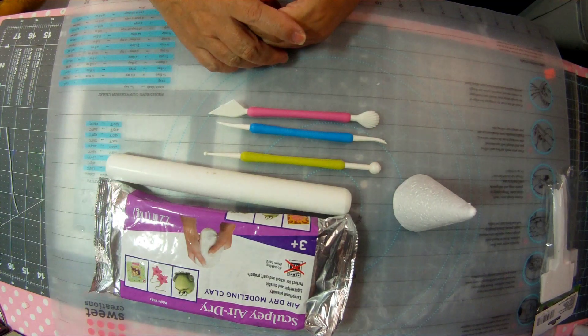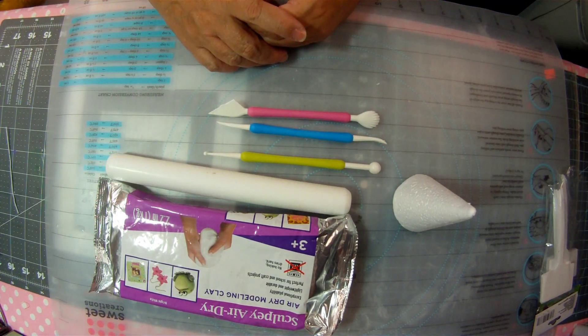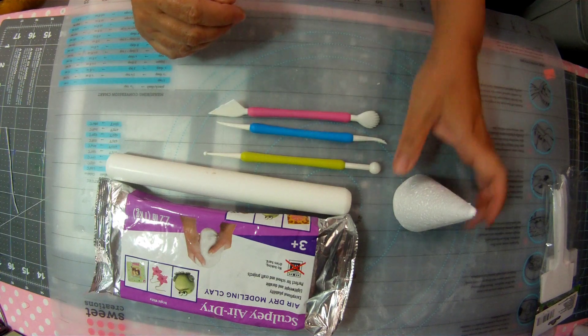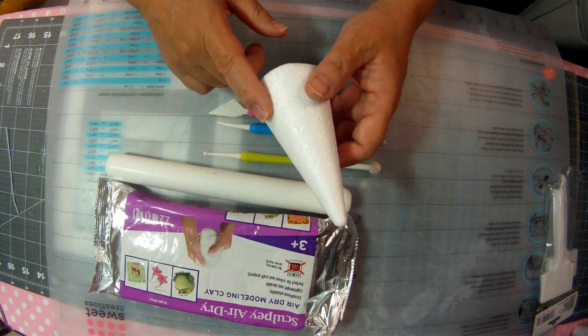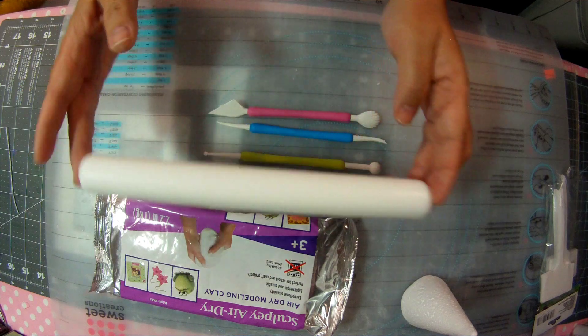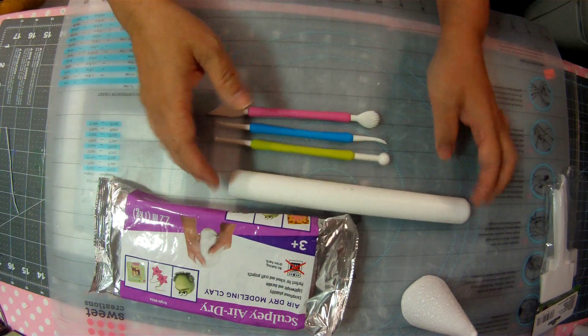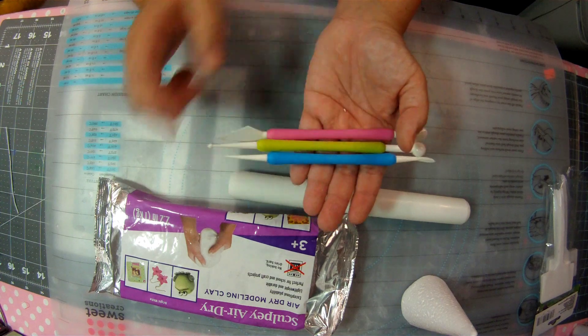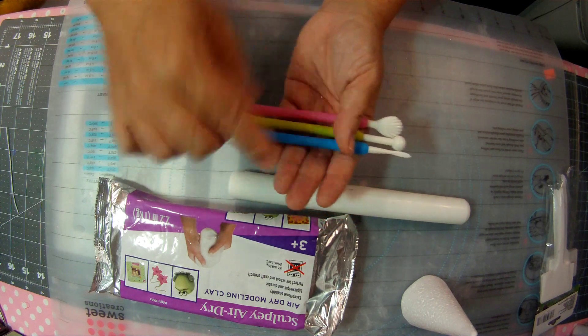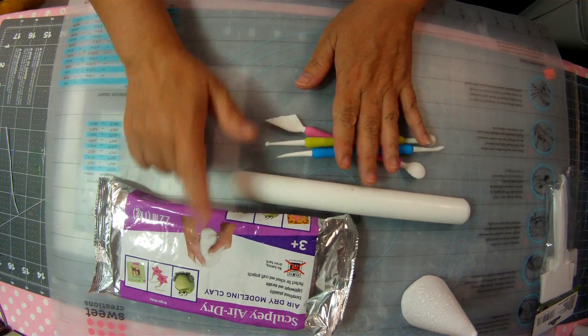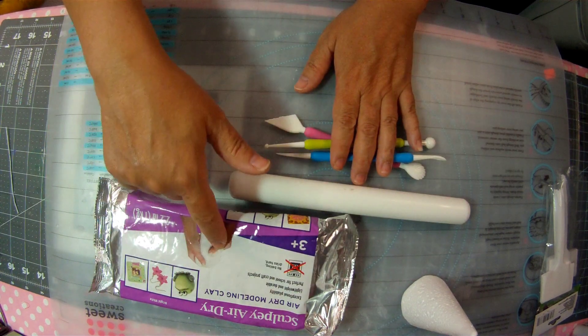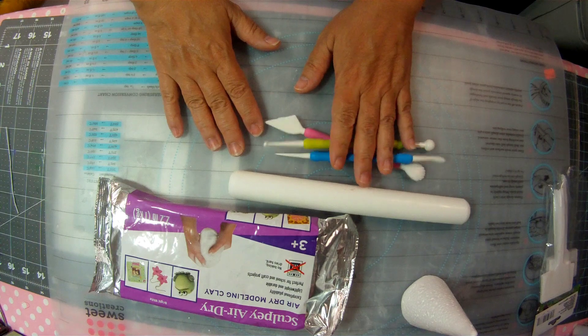Alright guys, let me show you everything you are going to need to make this air dry clay cone gnome. You're going to need a four inch styrofoam cone, a rolling pin, some tools - these came from the Dollar Tree to design fondant - and you're going to need your air dry Sculpey clay. Let me get this all opened up and situated, and we will get started.